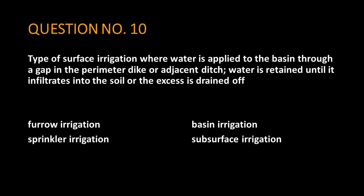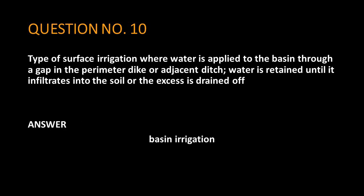Question number 10. Type of surface irrigation where water is applied to the basin through a gap in the perimeter dike or adjacent ditch; water is retained until it infiltrates into the soil or the excess is drained off. The answer is: basin irrigation.